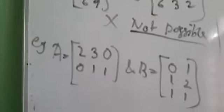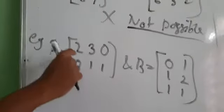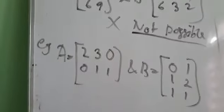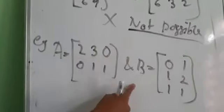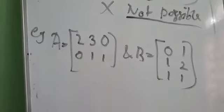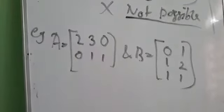In the second example, for matrix A, the number of rows is 2. And for matrix B, the number of columns is also 2. So in this case, matrix multiplication will be possible.